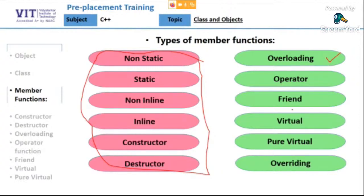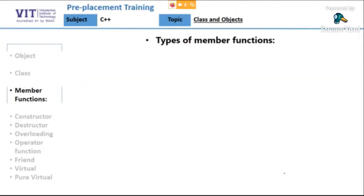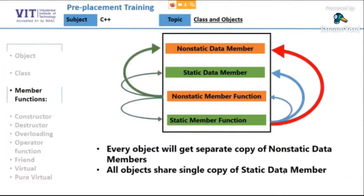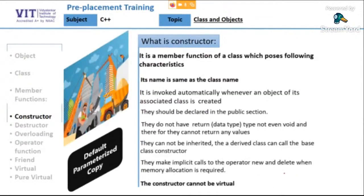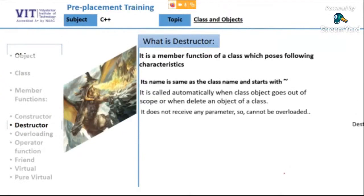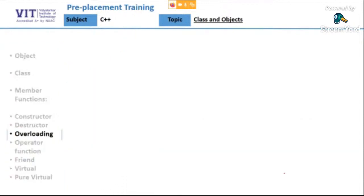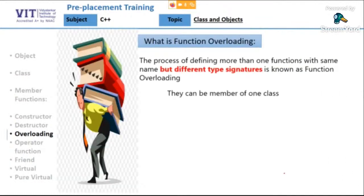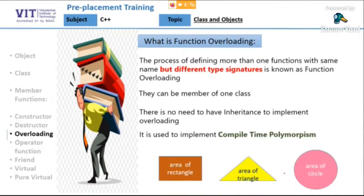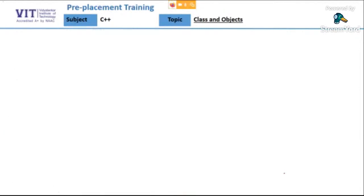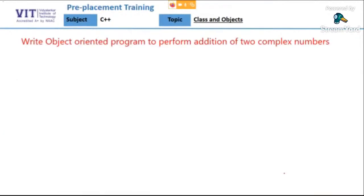Today we have to cover the remaining things: operator overloading, friend function, virtual function, pure virtual function, and function overriding. I hope today my audio and video are clear. Quickly recapping: constructor is a member function with the same name as the class; destructor also has the same name but starts with tilde, and destructor can be virtual whereas constructor cannot. Function overloading allows many functions with the same name but different type signatures — they implement compile-time polymorphism.